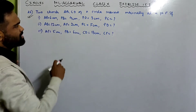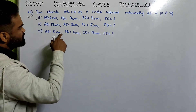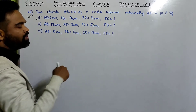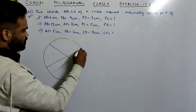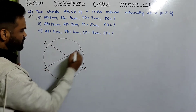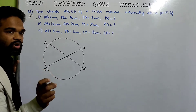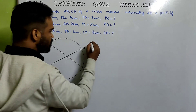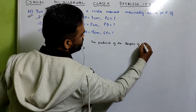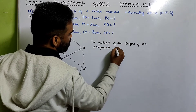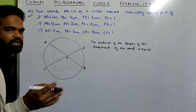Two chords AB and CD of a circle intersect internally at a point P. Given: AP = 6 cm, BP = 4 cm, PD = 3 cm — find PC. I'll first draw the diagram. There's your circle with two chords AB and CD intersecting internally. The theorem states: the product of the lengths of the segments of the chords are equal, whether they intersect internally or externally.